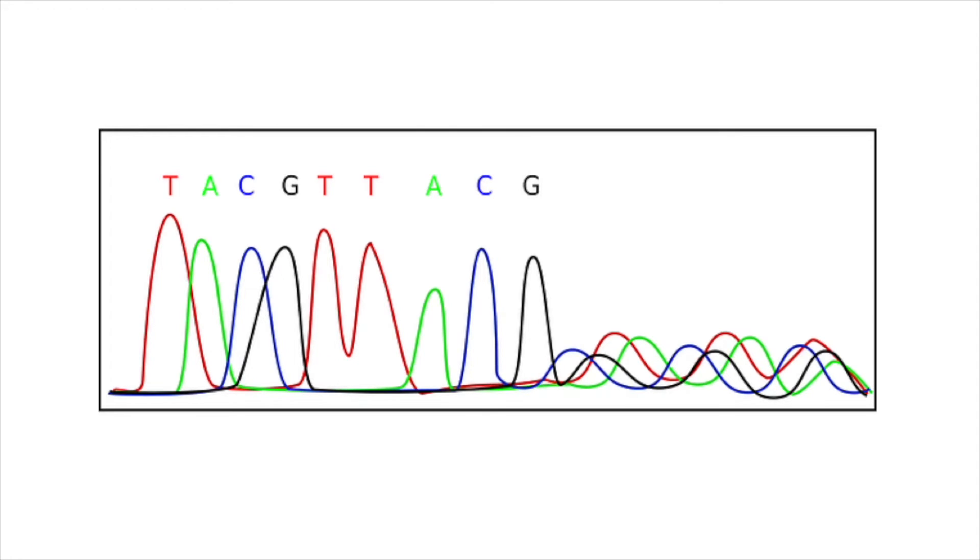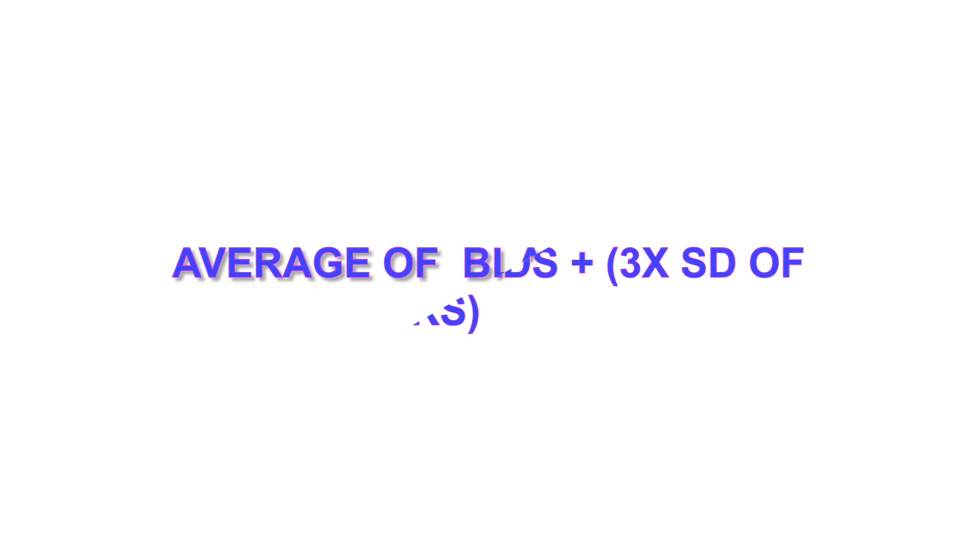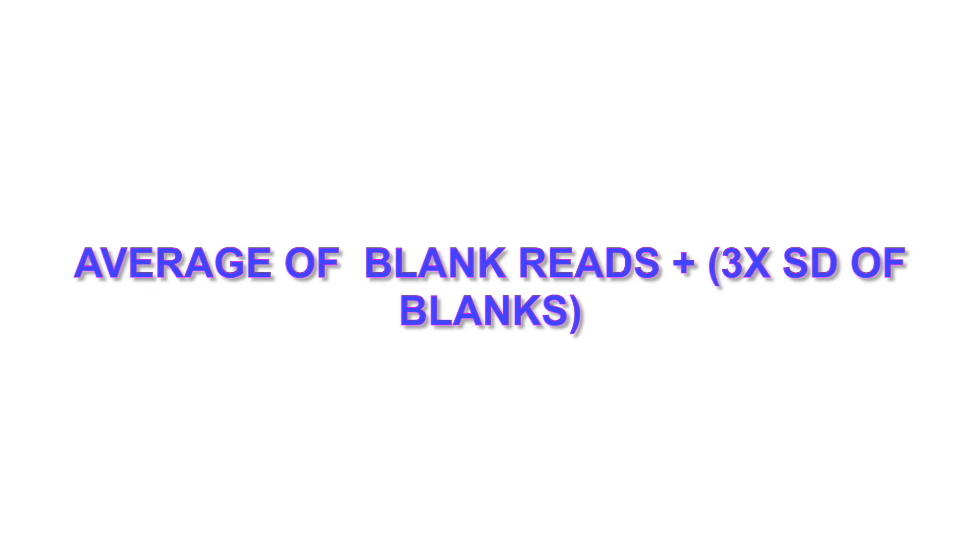To calculate it from blank readings, so where you've done multiple reads, so replicates of your blanks, you basically will need the average of those reads, then add that to three times the standard deviation of those reads, and that will set your limit of detection. And if you wanted the limit of quantitation, then it would be ten times. So the alternative method, which I showed, was to read it from your standard curve.